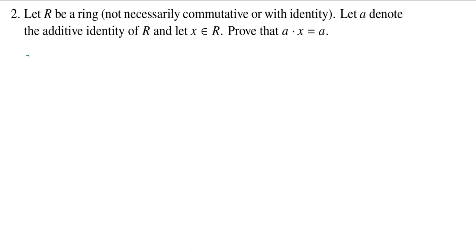I can start with A, and because A is the additive identity, I can get it by looking at the difference between A times X and A times X. If you subtract an element from itself you get the additive identity.